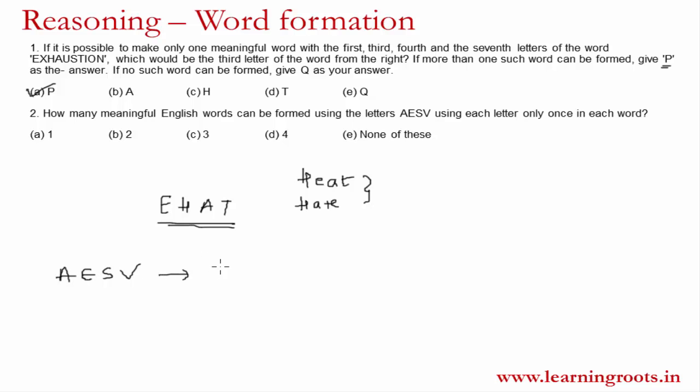The first word that is obvious is S-A-V-E — 'save'. Another word that can be formed is V-A-S-E — 'vase'. There is no other word that can be formed using these letters. So A-E-S-V can be either 'save' or 'vase', giving us two meaningful English words. There might be questions where you are asked if more than two words can be formed, so you have to be alert regarding the conditions.